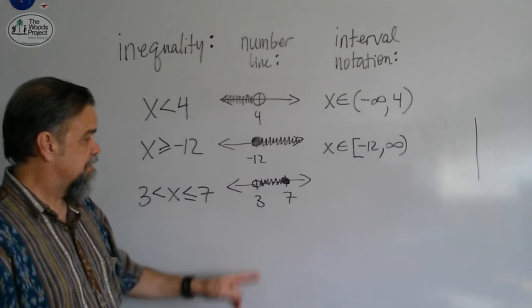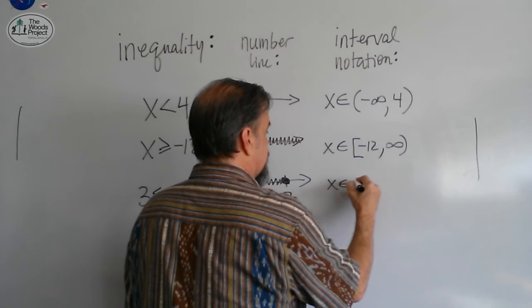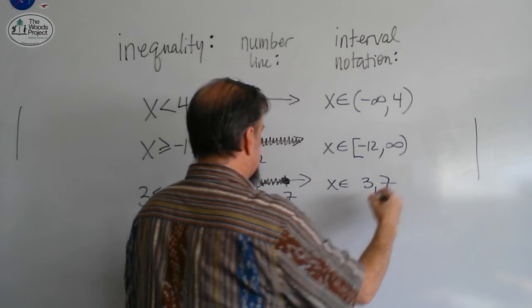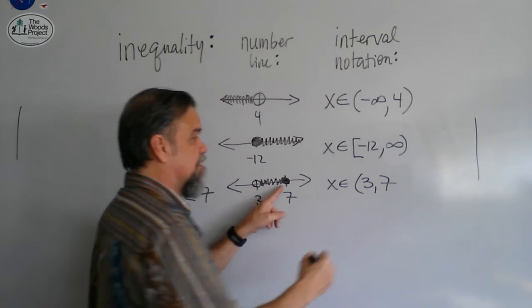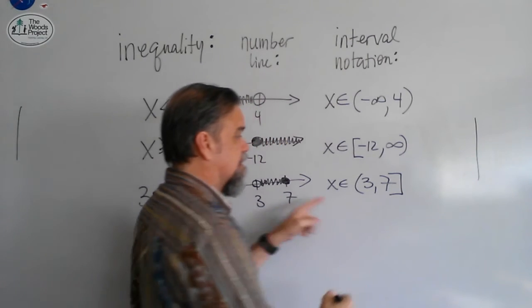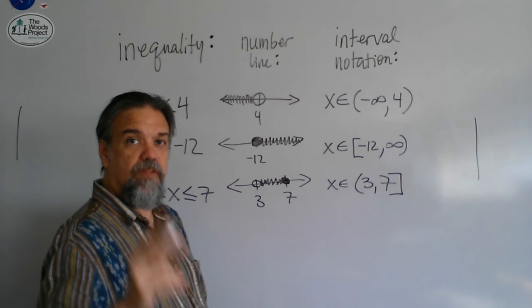So, interval notation, we're going to say it goes from 3 to 7, so x is in the interval from 3 to 7. I'm going to put a parenthesis there, and I'm going to put a bracket there to say, include 7, but don't include 3. Let me give you one more.